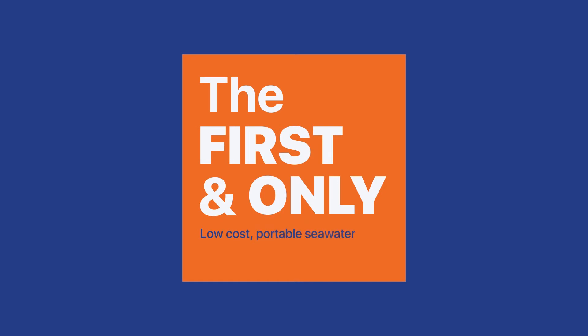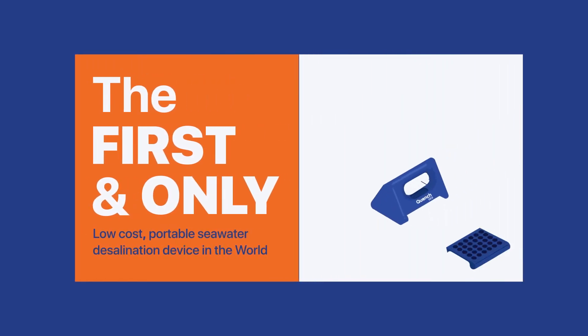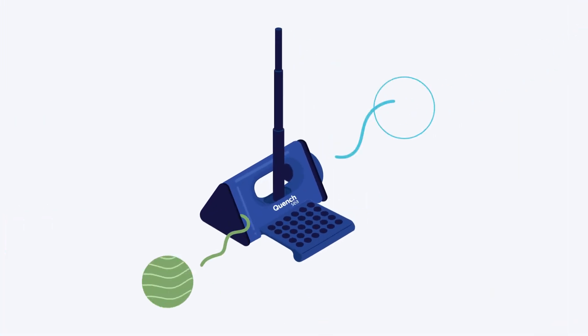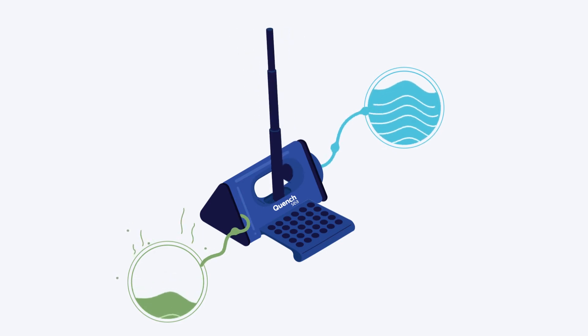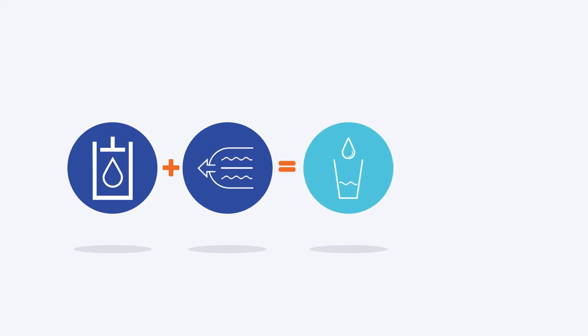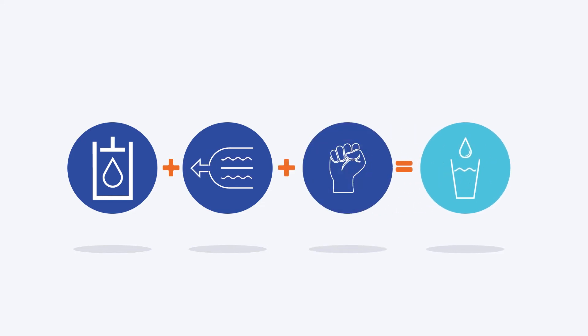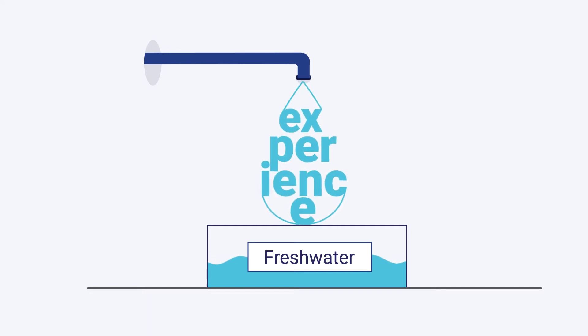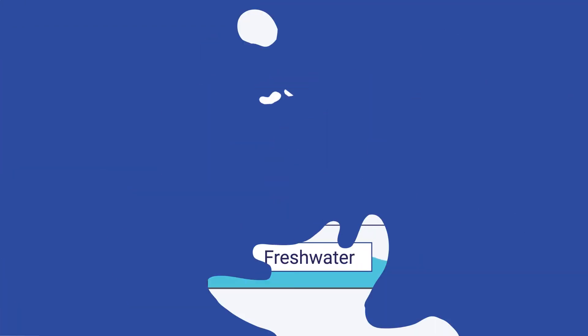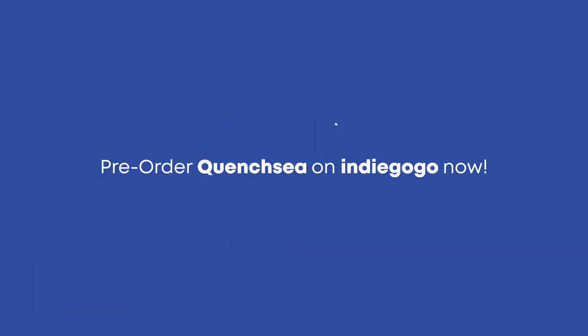QuenchSea: the first and only portable seawater desalination device in the world. We've developed the world's only low-cost portable, easy to use seawater desalination device using an innovative technology. We've combined a simple hydraulic system and a small reverse osmosis membrane to desalinate seawater into freshwater using only human power. QuenchSea is meticulously crafted to embody the highest standards of experience, design, and engineering while setting a new standard for water and energy use. Pre-order QuenchSea on Indiegogo now.